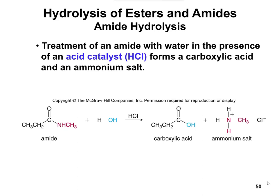We're going to start by identifying the two regions that are going to switch. On the slide, you can already see it's going to be the amide, which is in red, and the OH, which is in blue. The idea is that in the amide, the carbonyl group and the carbons attached to it don't stay. We're going to break the amide bond — the bond between the carbonyl and the nitrogen. For an ester, we broke the ester bond between the carbonyl and the oxygen.